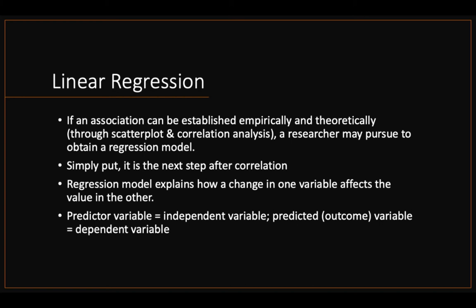Your regression model allows you to explain how a change in your predictor variable can affect the changes in your dependent variable. This is why in regression, oftentimes your independent variables are called predictors, and your dependent variables are sometimes called the outcome variable or the predicted variable.